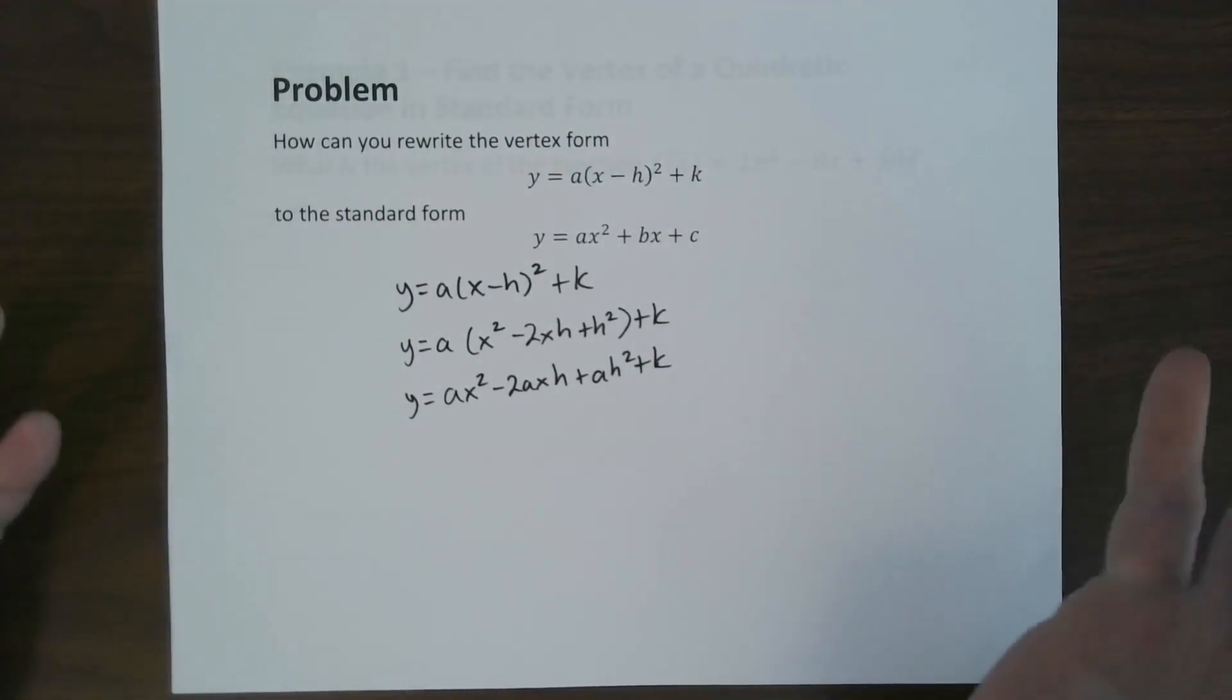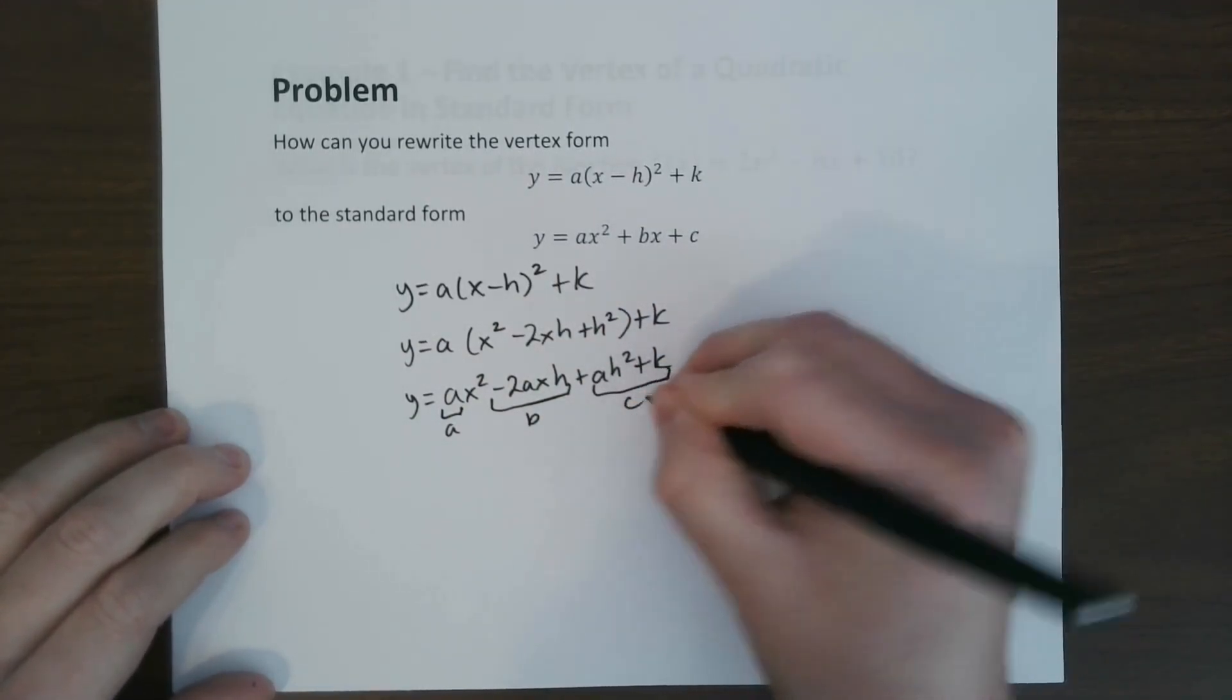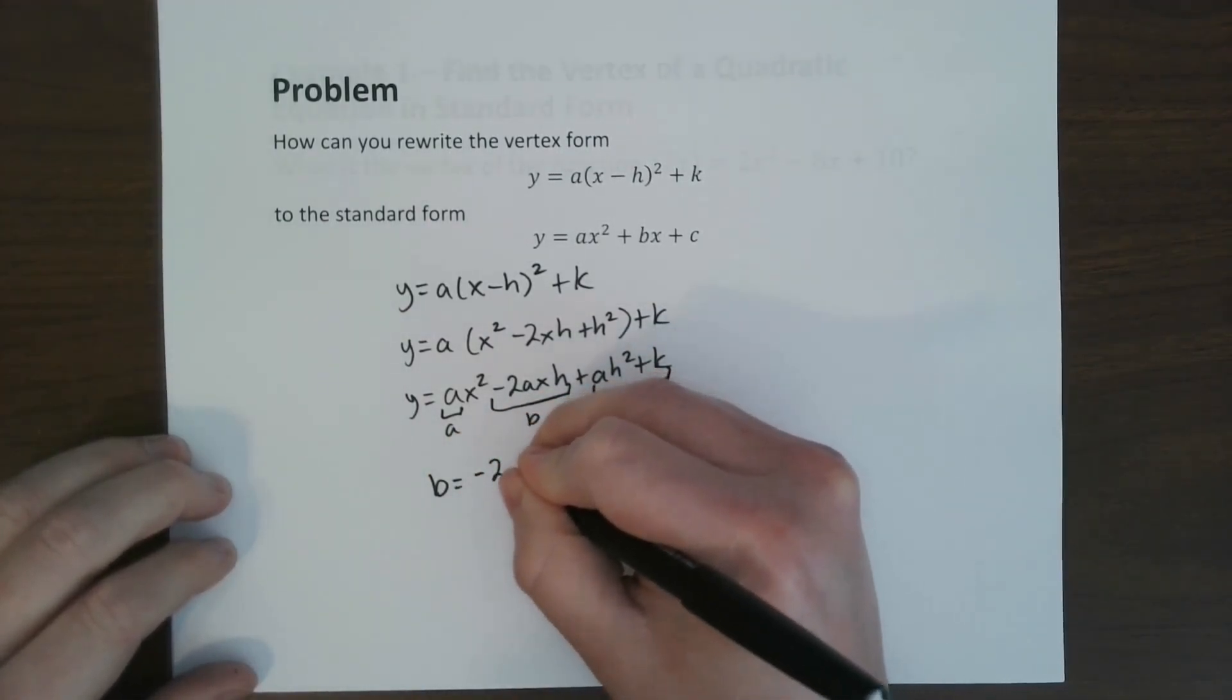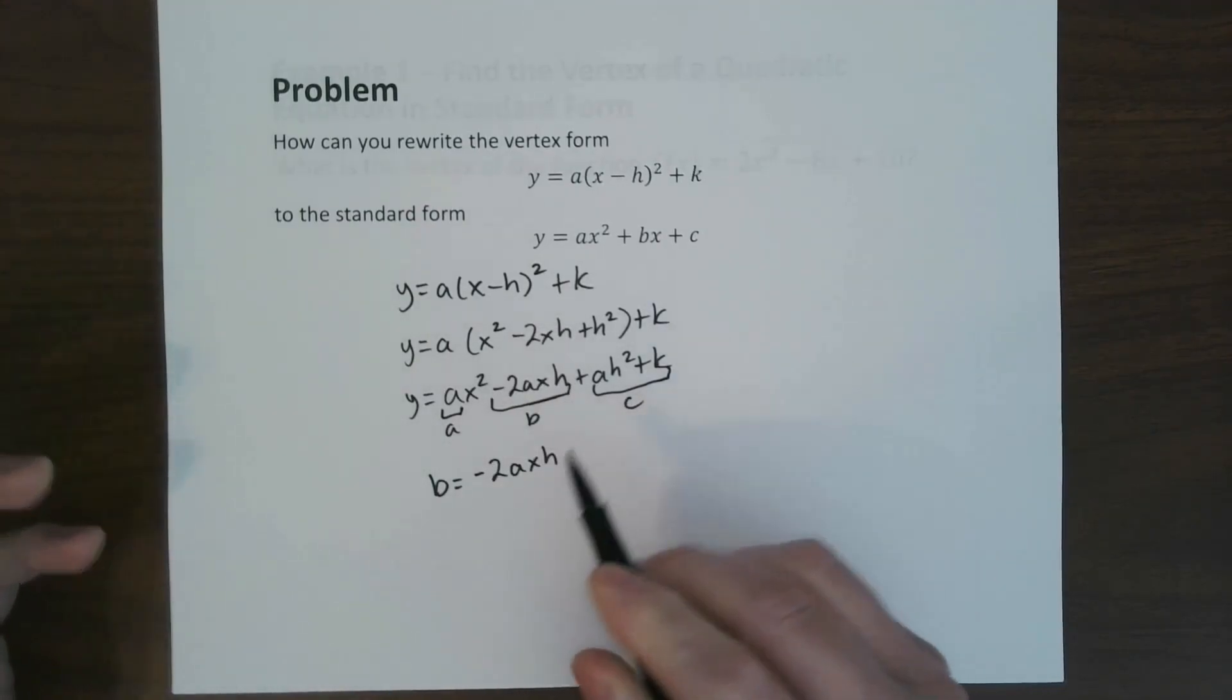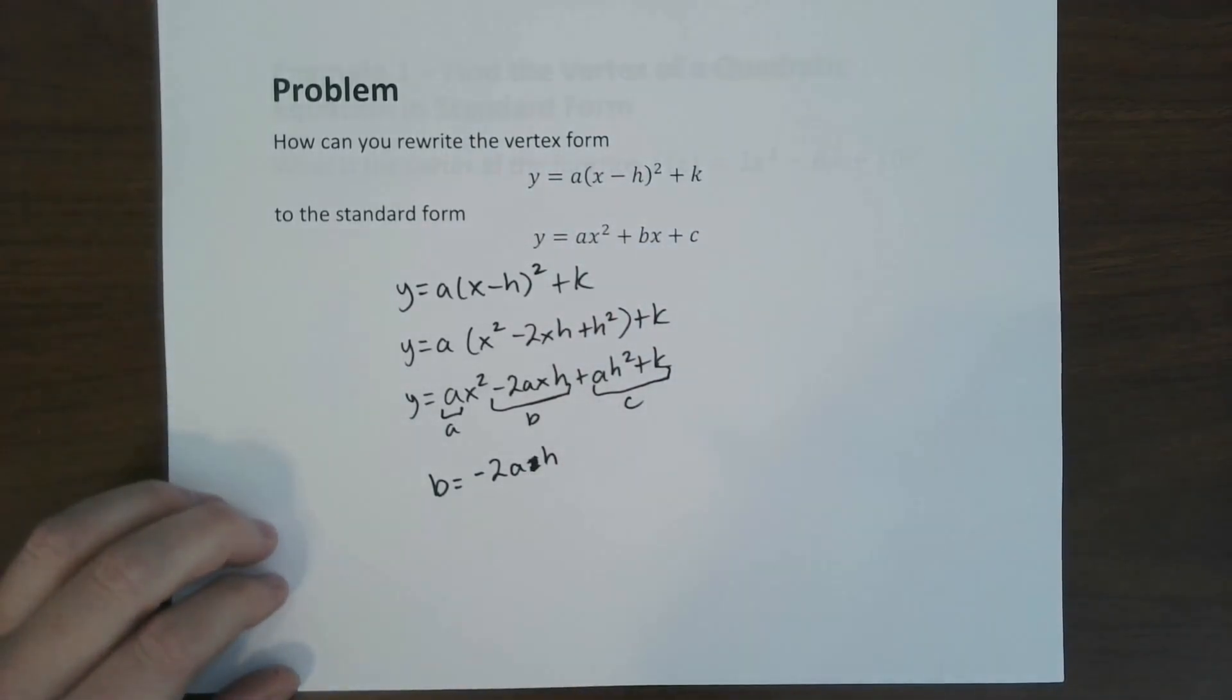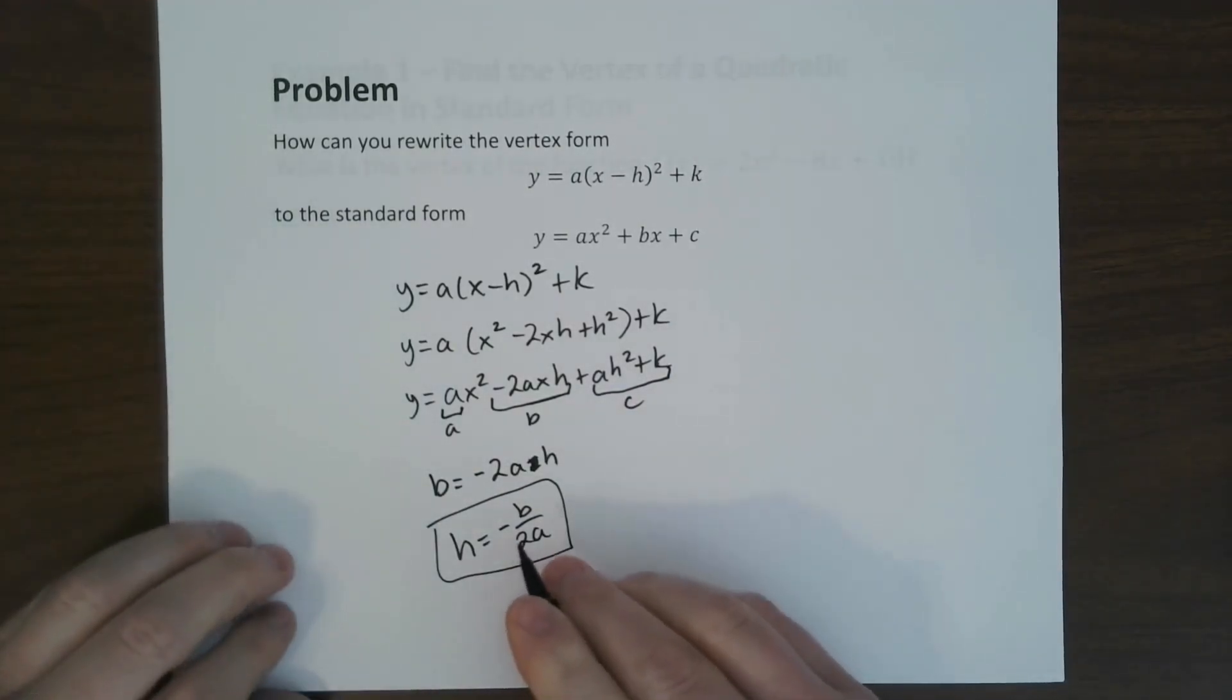And so now, basically, we are in standard form. So our a is a. Our b is this part with the x at the end. And this right here is all c. So we're in that form. So we know b equals this part right here. So if we set b equal to negative 2axh, we can actually find the x component of the vertex. And so if we solve for h, we get h equals negative b over 2a, which we are going to use this through this entire lesson today. This is the main thing that we're going to need to know.